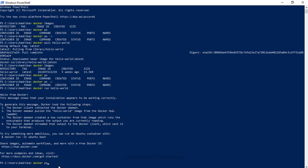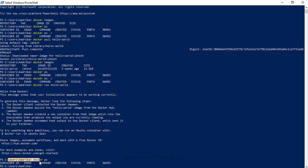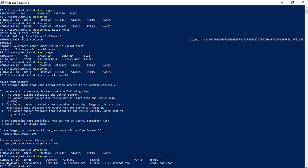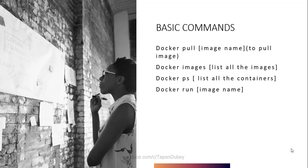Now let's check for the container — I'm not seeing a running container because our container is stopped. Let's check for the stopped container — now I can see our new container for the hello-world Docker image. So we used 'docker pull' to pull the hello-world image, 'docker images' to see the image, 'docker run' to create a container, and 'docker ps' to see the container.